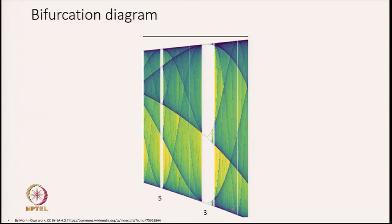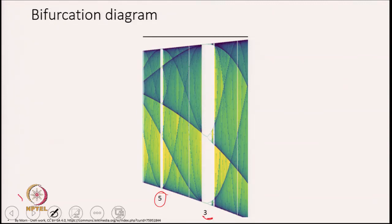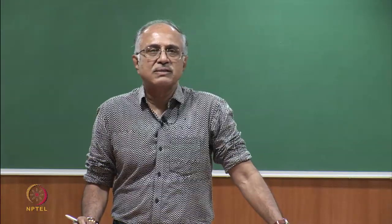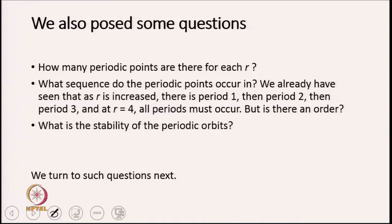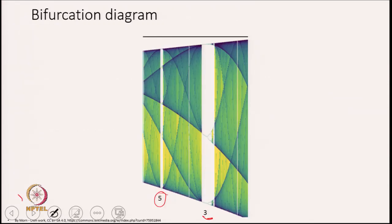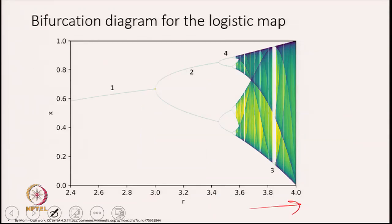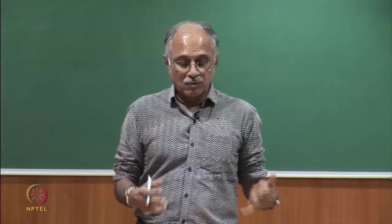To the left of period 3 there is period 5, so we see period 1, period 2, period 4, period 8, then period 5, then period 7, and period 3 at this particular point. How many periodic points are there at each r? Looking at the diagram, at each value of r it appears that there is a single periodic orbit, but what is the reality?